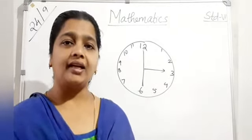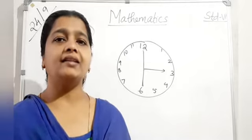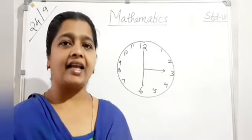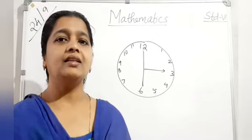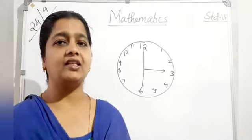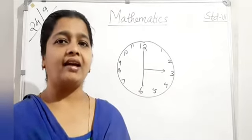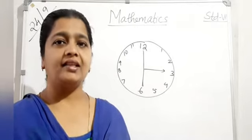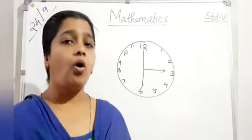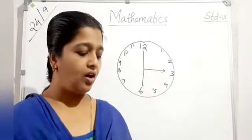An angle which is greater than 0 degrees but less than 90 degrees is called an acute angle. An angle of measure 90 degrees is called a right angle. An angle greater than 90 degrees but less than 180 degrees is obtuse. An angle greater than 180 degrees but less than 360 degrees is a reflex angle. A full angle or complete angle is 360 degrees.